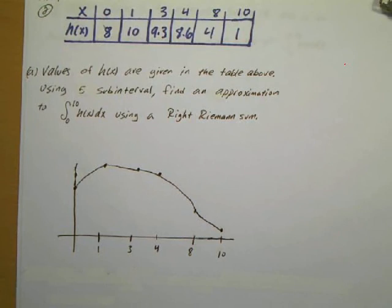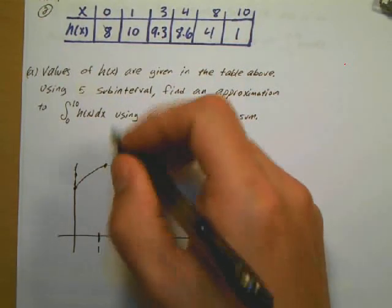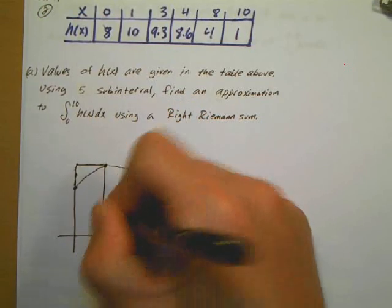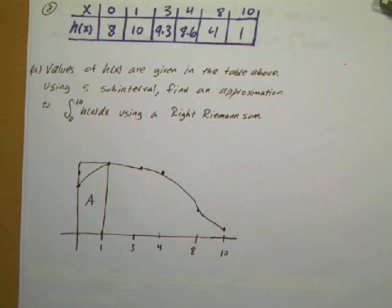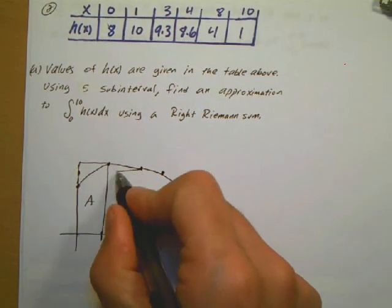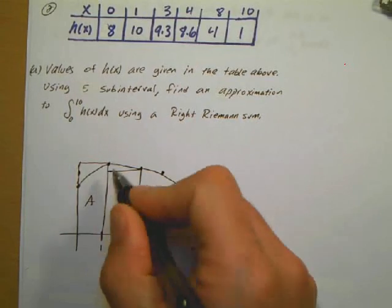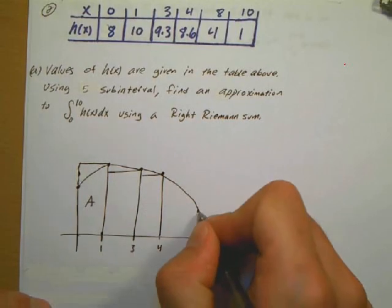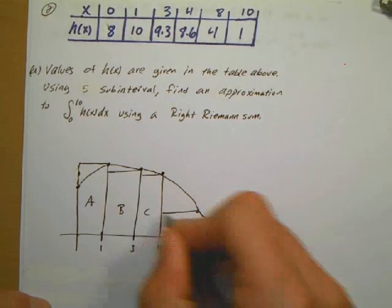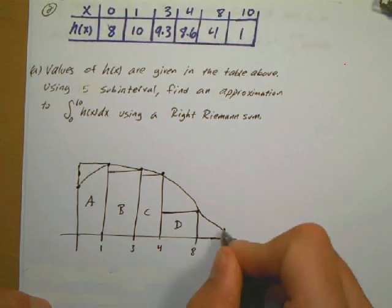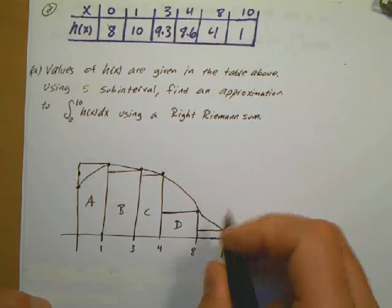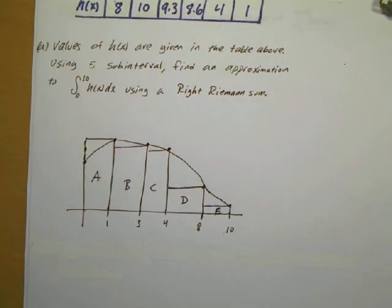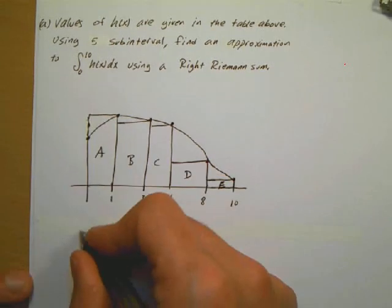Using the right Riemann's Sum, the first rectangle from 0 to 1 touches on the right, so it's actually outside the curve — that's rectangle A. The next rectangle, from 1 to 3, also touches on the right — rectangle B. Then rectangles C, D, and E follow, each using their right endpoint. The last rectangle E is small because the function is close to the axis there.